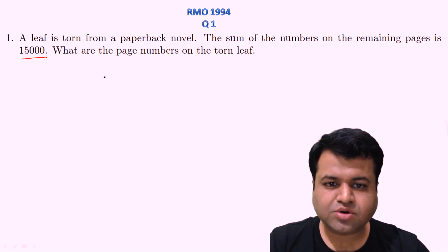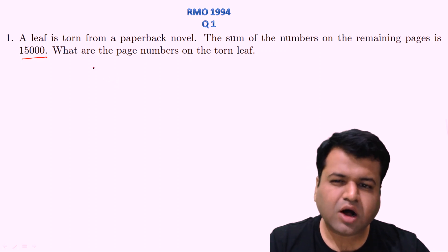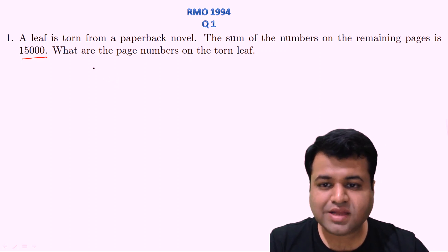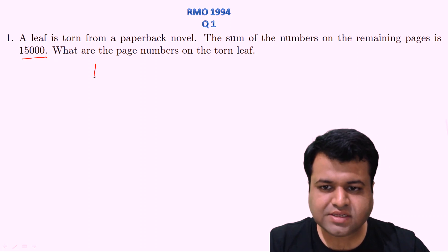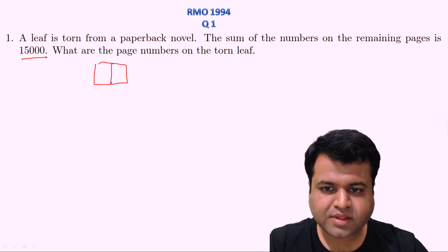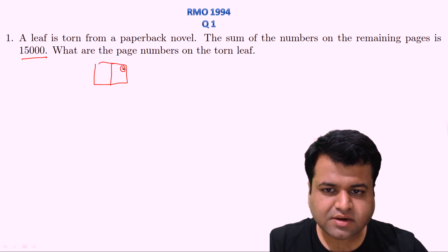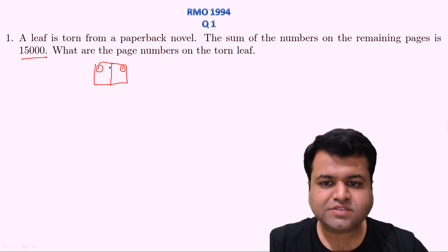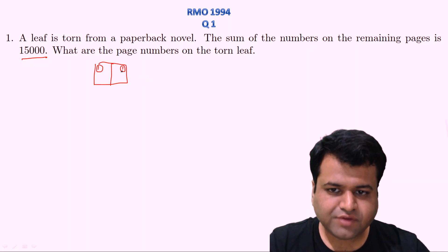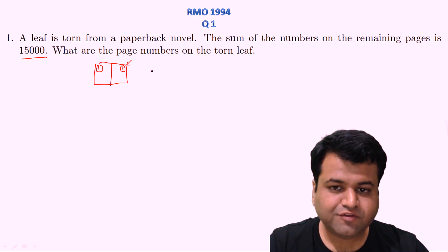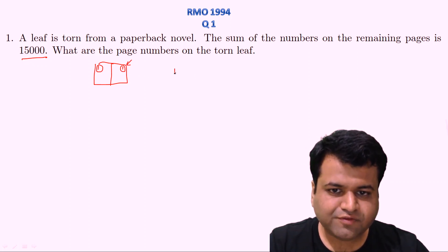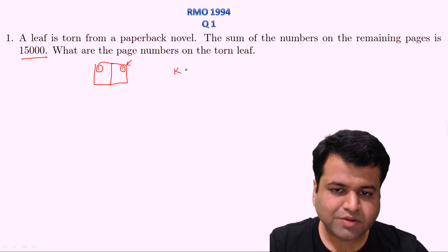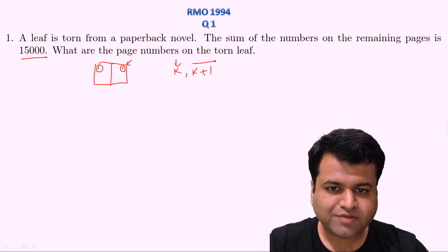This question entirely depends on how the numbering of the novel is done. Let's say this is the open novel. If the first page has page number one, that determines the numbering system. Because if we tear a leaf, the two page numbers on that leaf will be K and K+1, where K will be odd and K+1 will be even.